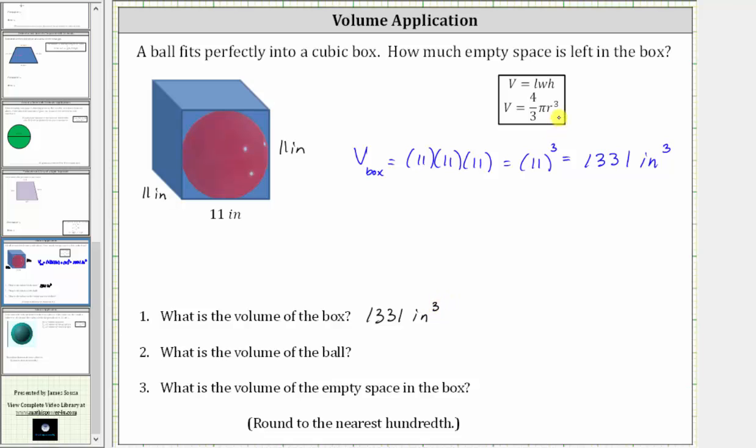And now we will determine the volume of the ball, where the volume of a ball or sphere is equal to 4/3 pi r cubed. So looking at the diagram, because this length is 11 inches, we know the diameter of the ball or sphere is 11 inches, but we need the radius to determine the volume. And the radius is equal to half the diameter, and therefore the radius is equal to 11 inches divided by two, which is equal to 5.5 inches.